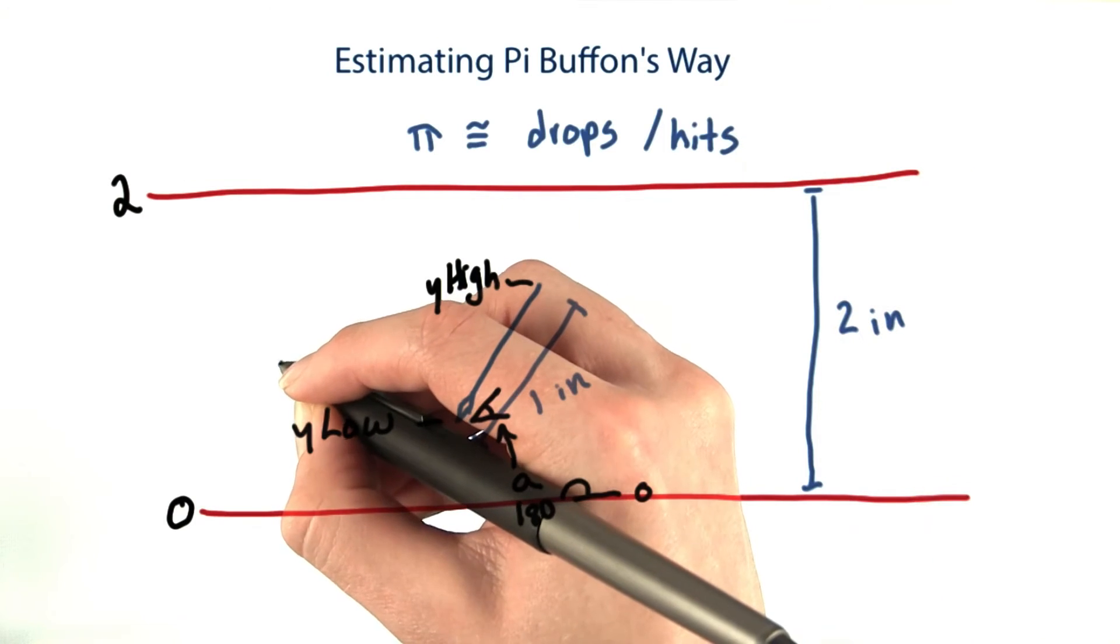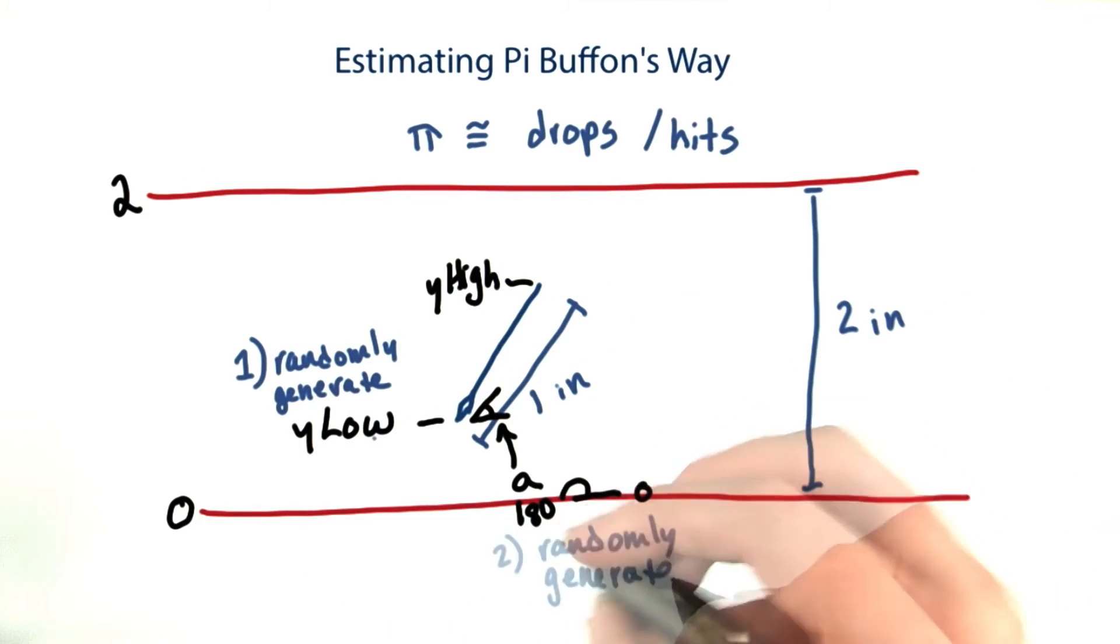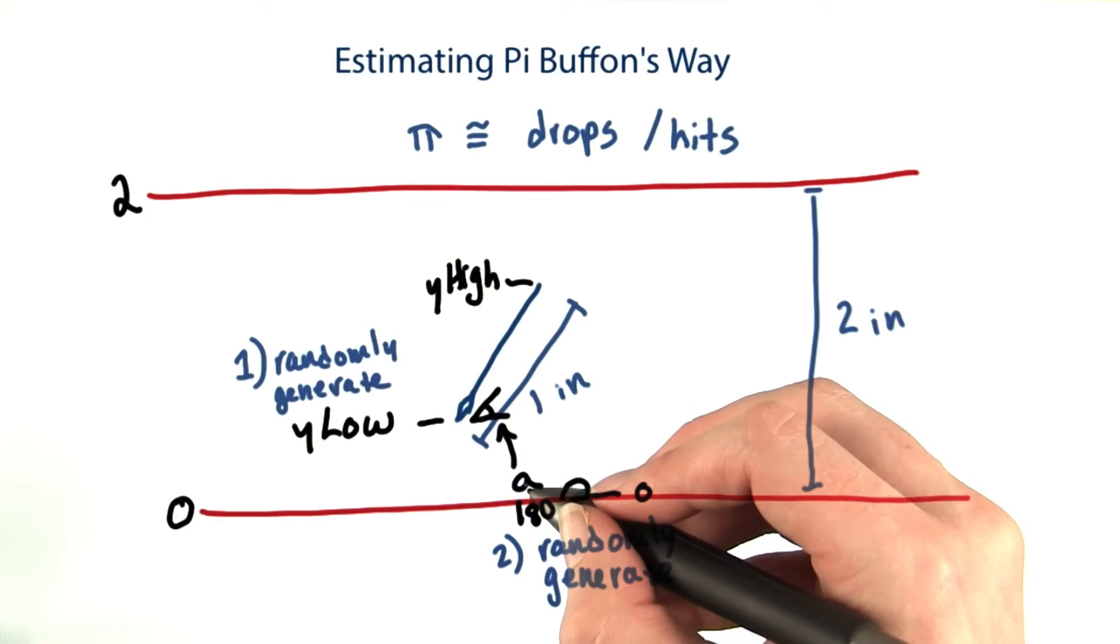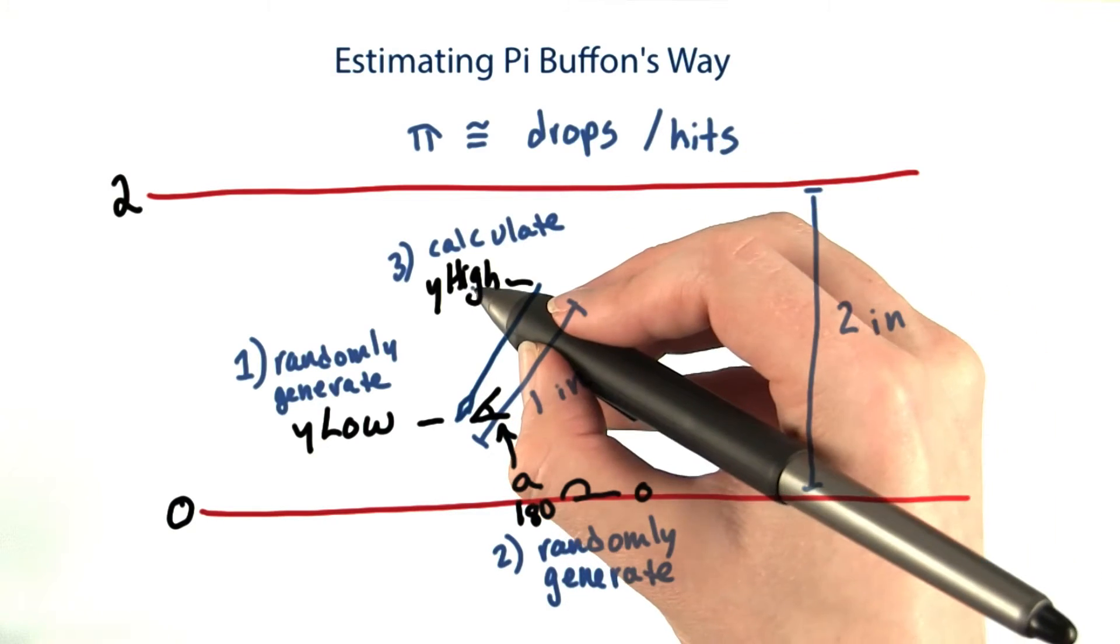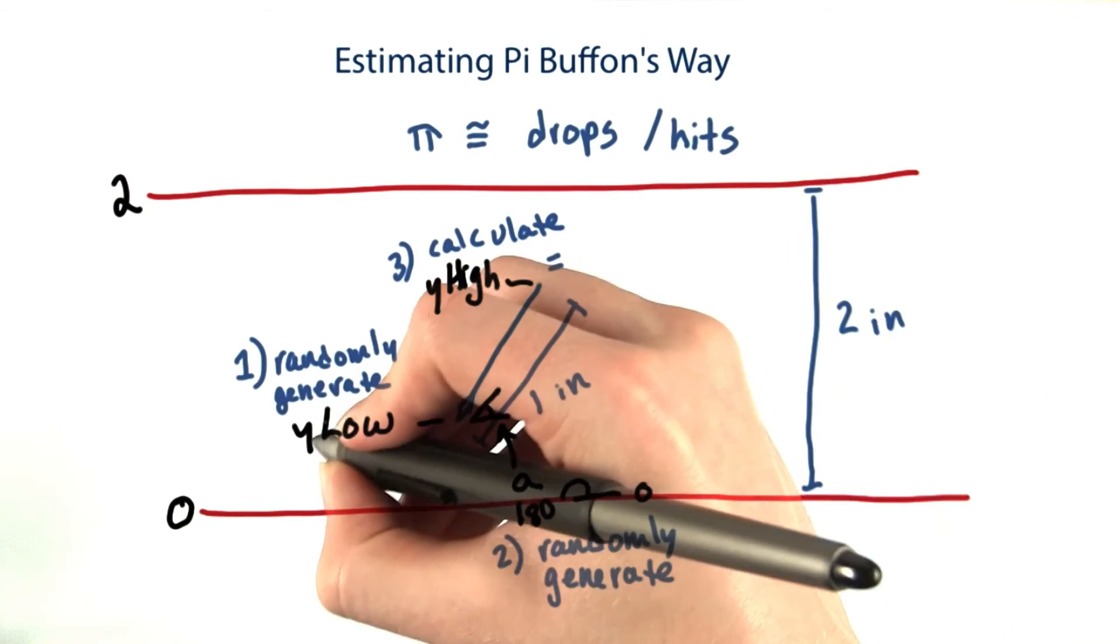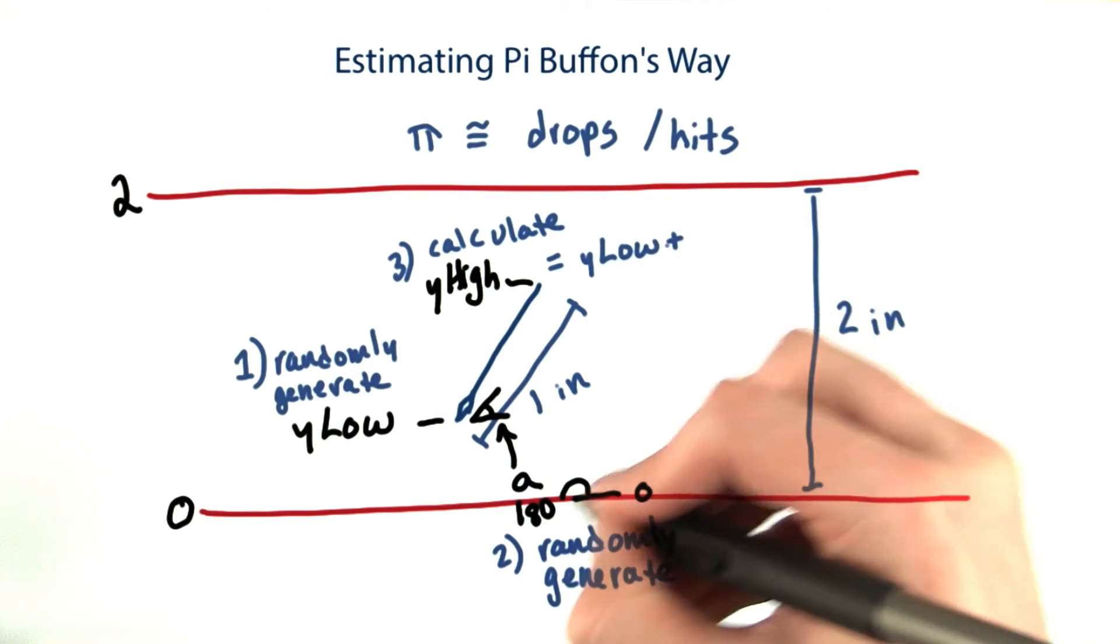So again, you want to randomly generate y low, randomly generate an angle A, and then calculate y high, which will be y low plus the sine of the angle.